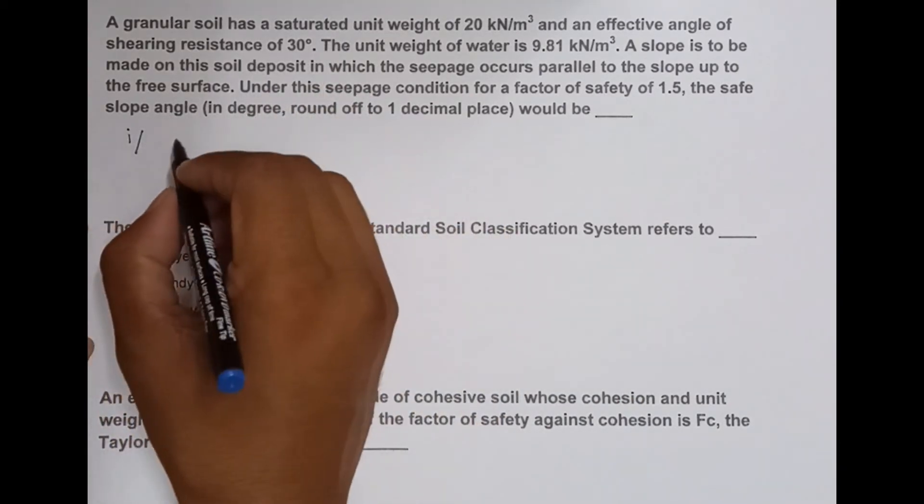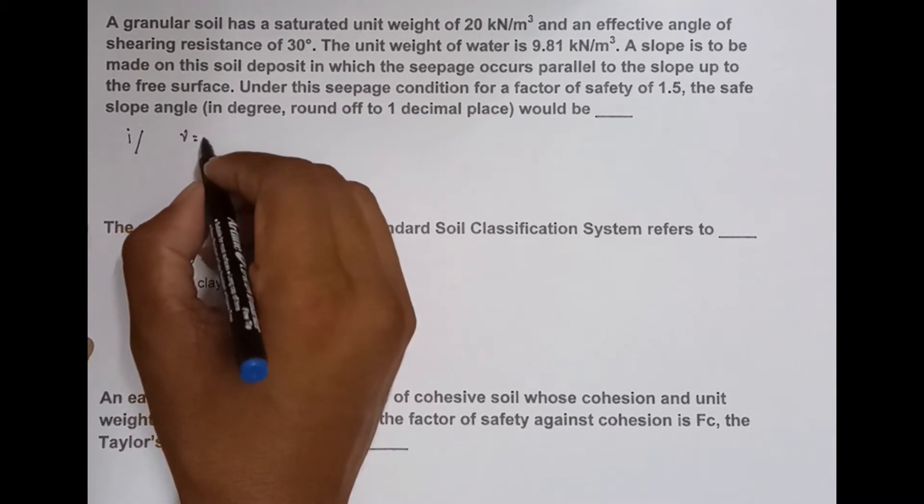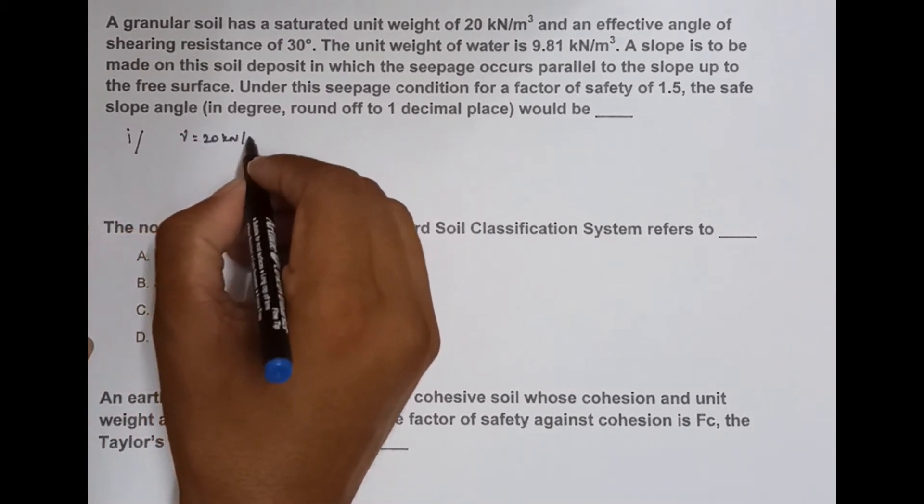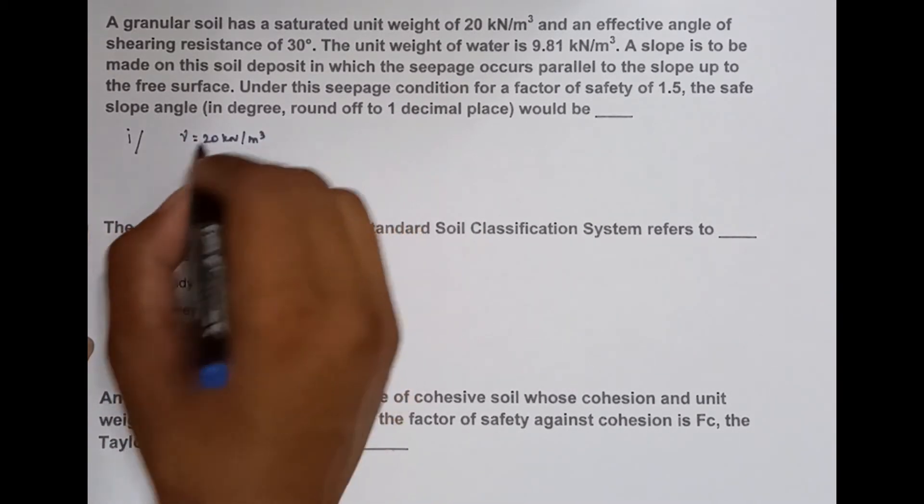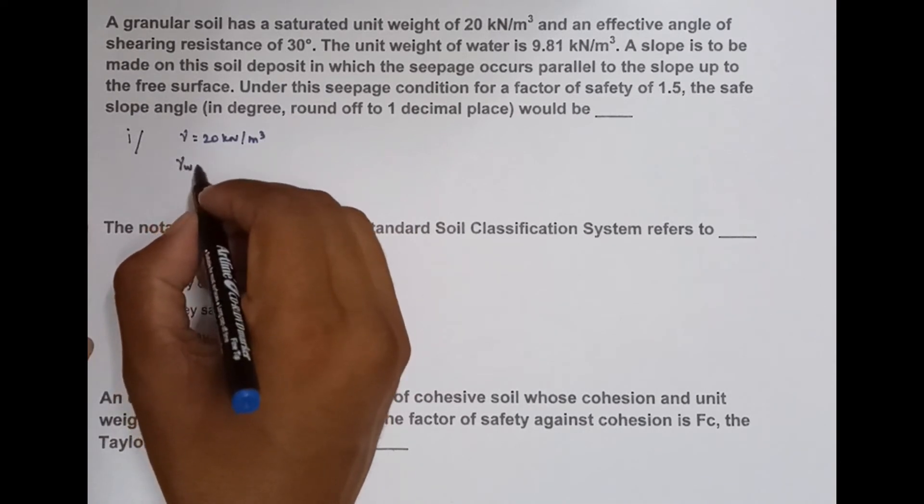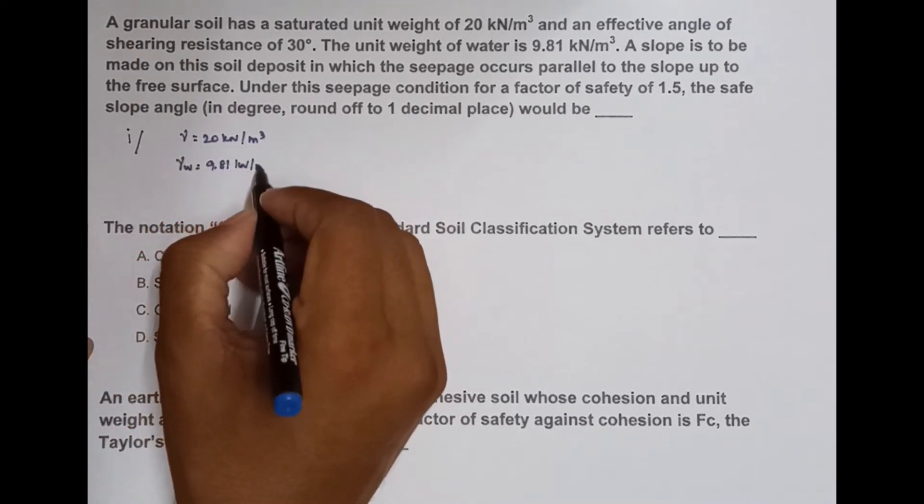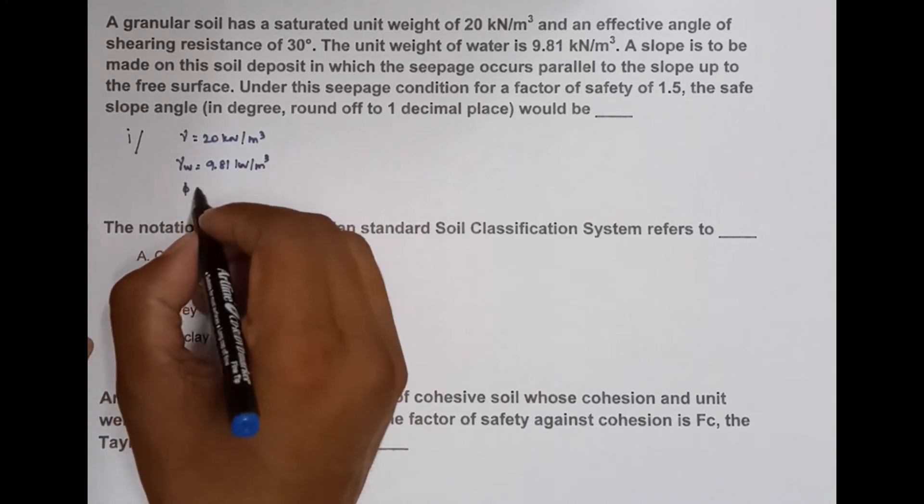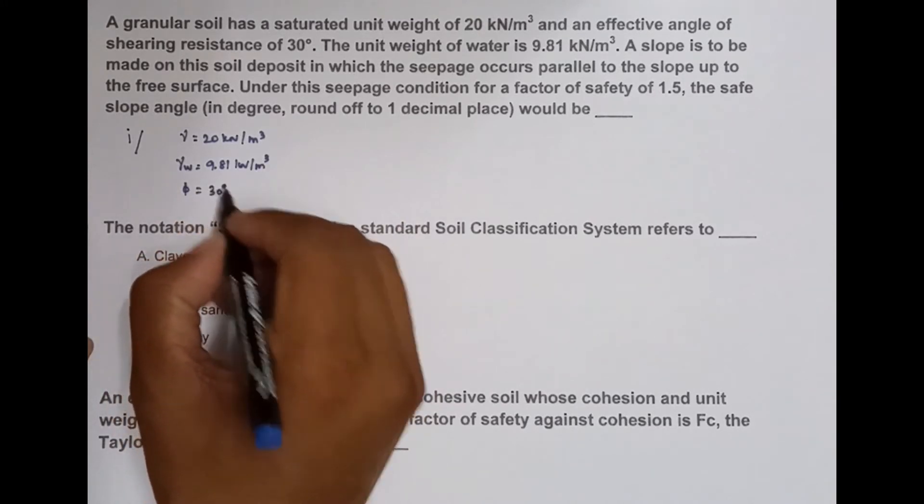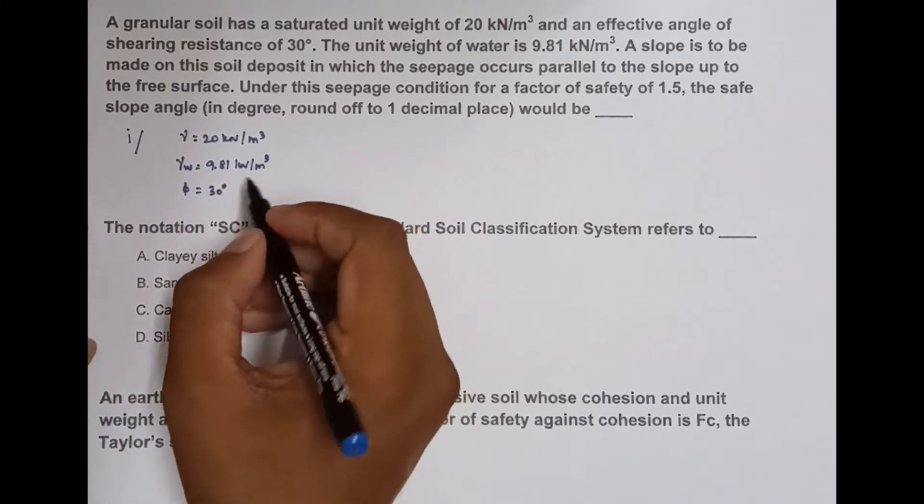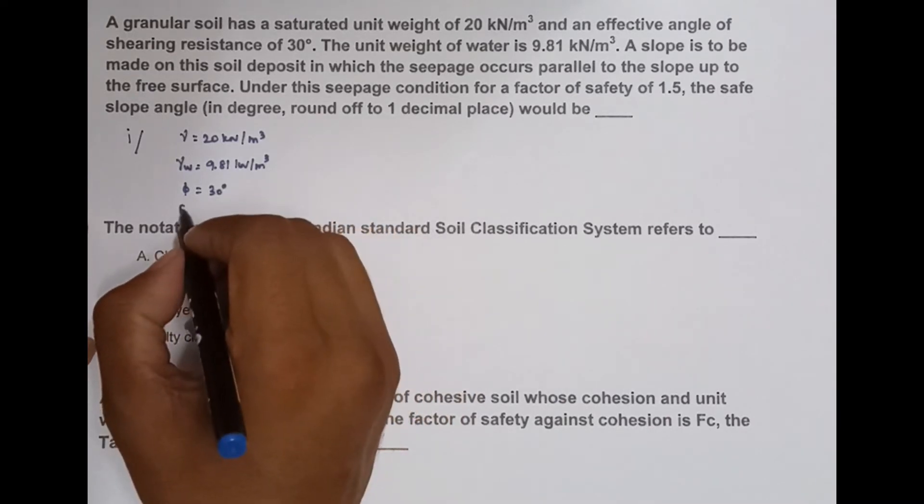So we have to find out the slope angle i. They are given: soil unit weight = 20 kN/m³, unit weight of water γw = 9.81 kN/m³, φ = angle of internal resistance = 30°, and factor of safety FOS = 1.5.